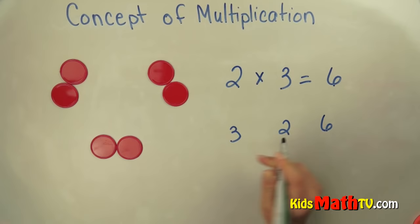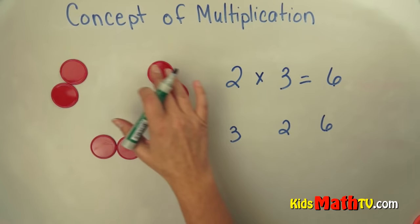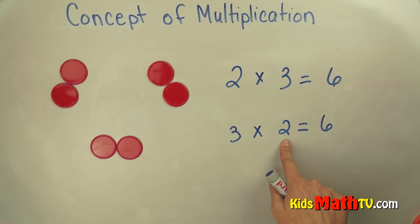So the way we write this in a multiplication problem is two, sorry, three groups of two equals six. There are three groups, two in each group, and that equals six. So we can make six as two groups of three or three groups of two.